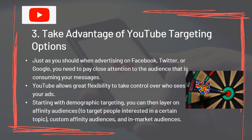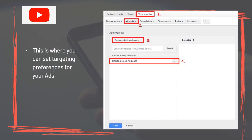Tip 3: Take advantage of YouTube targeting options. Just as you should when advertising on Facebook, Twitter or Google, you need to pay close attention to the audience that is consuming your message. YouTube allows great flexibility to take control over who sees your ads. Starting with demographic targeting, you can then layer on affinity audiences to target people interested in a certain topic, custom affinity audiences and in-market audiences. This is where you can set targeting preferences for your ads.